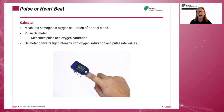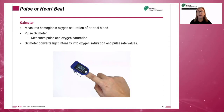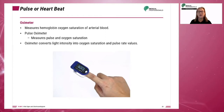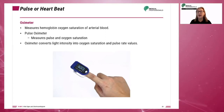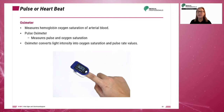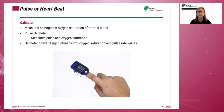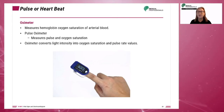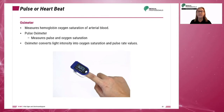The oximeter can attach to the foot, toe, earlobe, or nose. The pulse oximeter measures the pulse and oxygen saturation. The oximeter converts light intensity into oxygen saturation and pulse rate values.